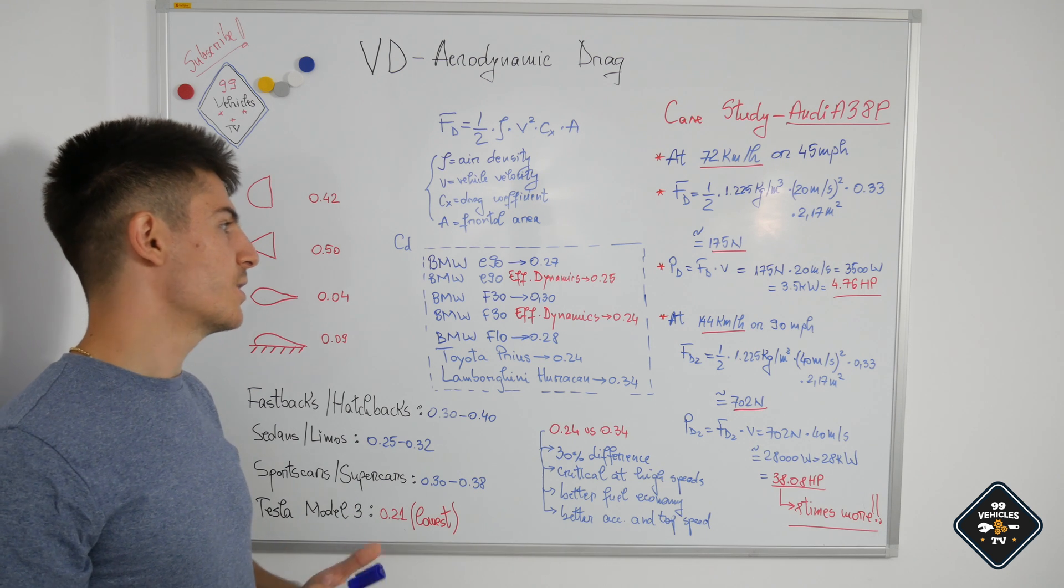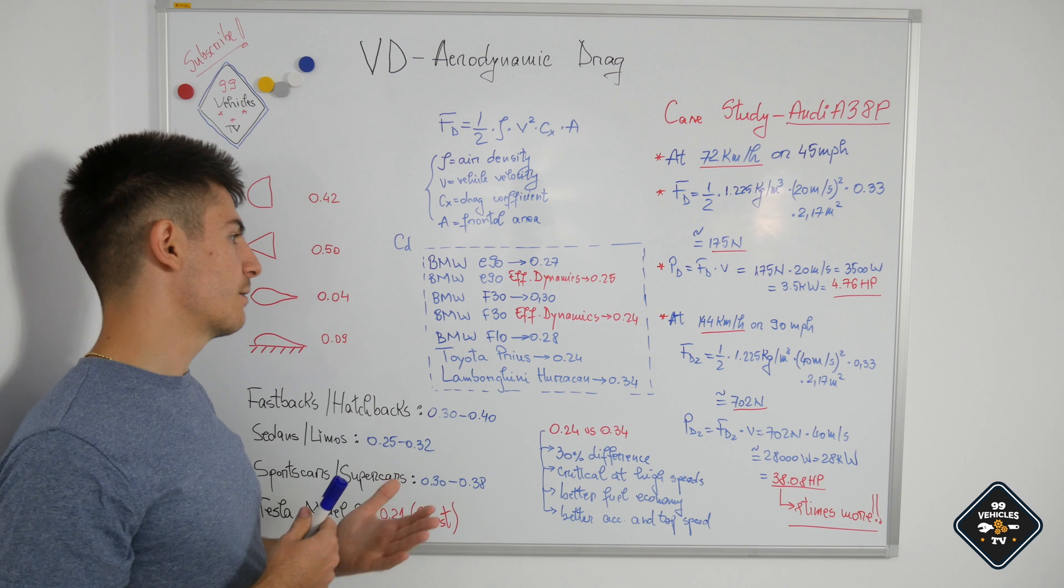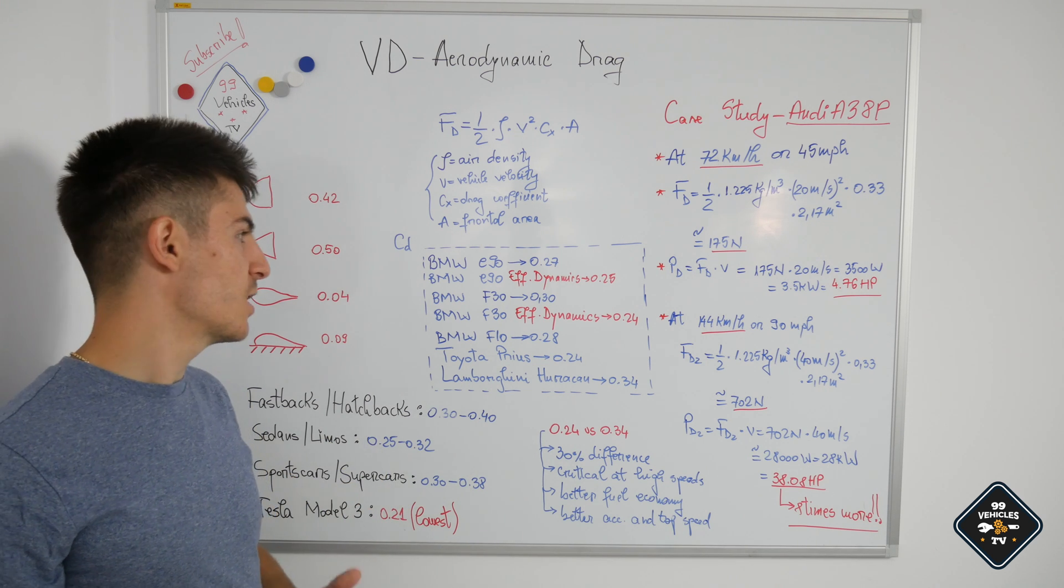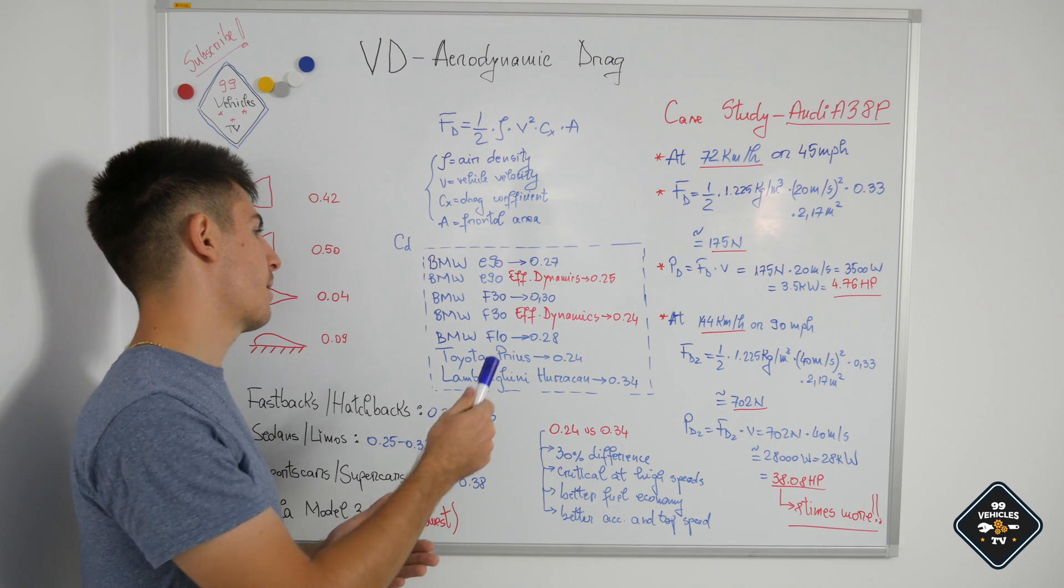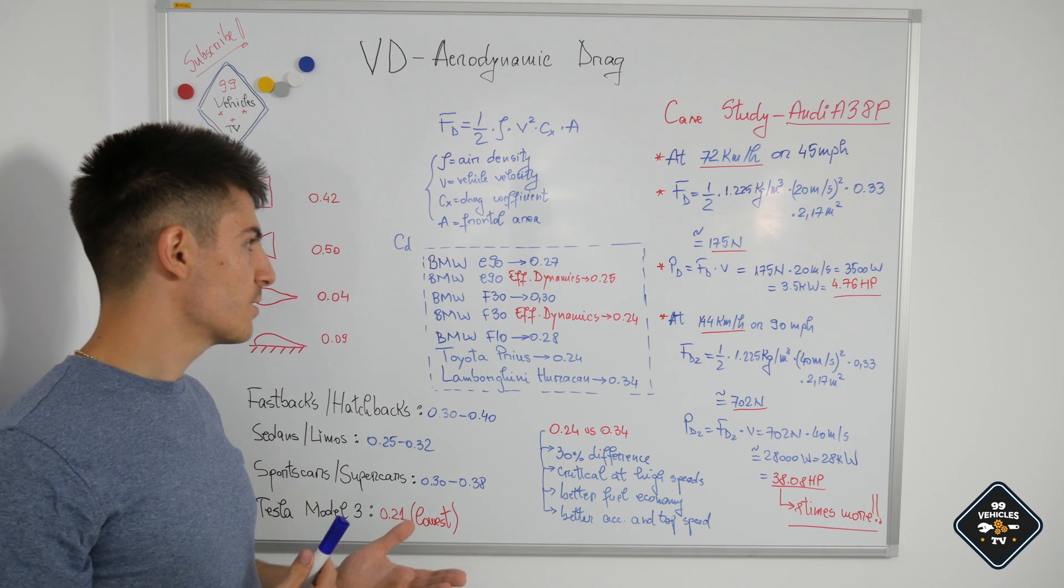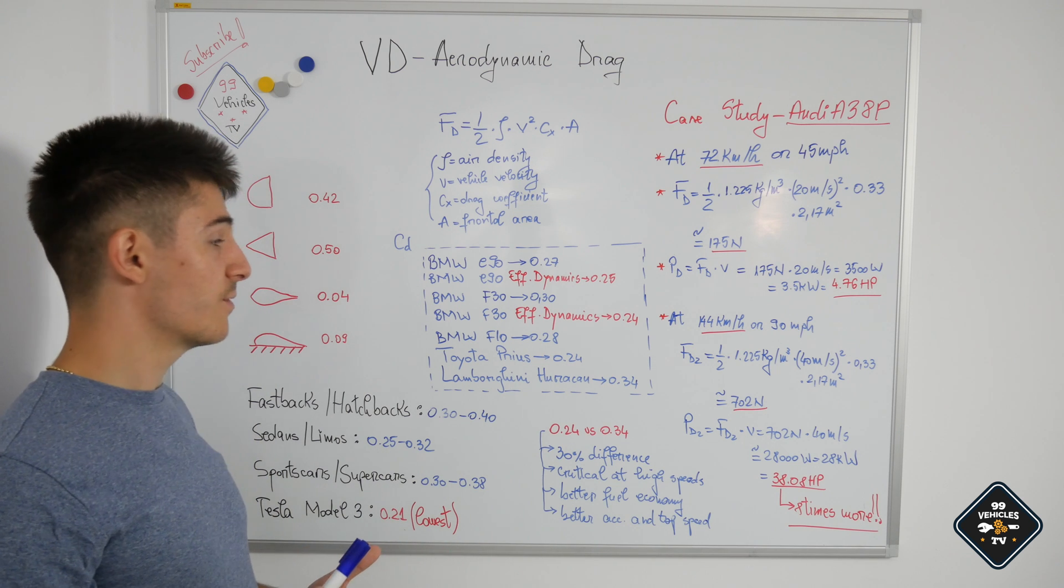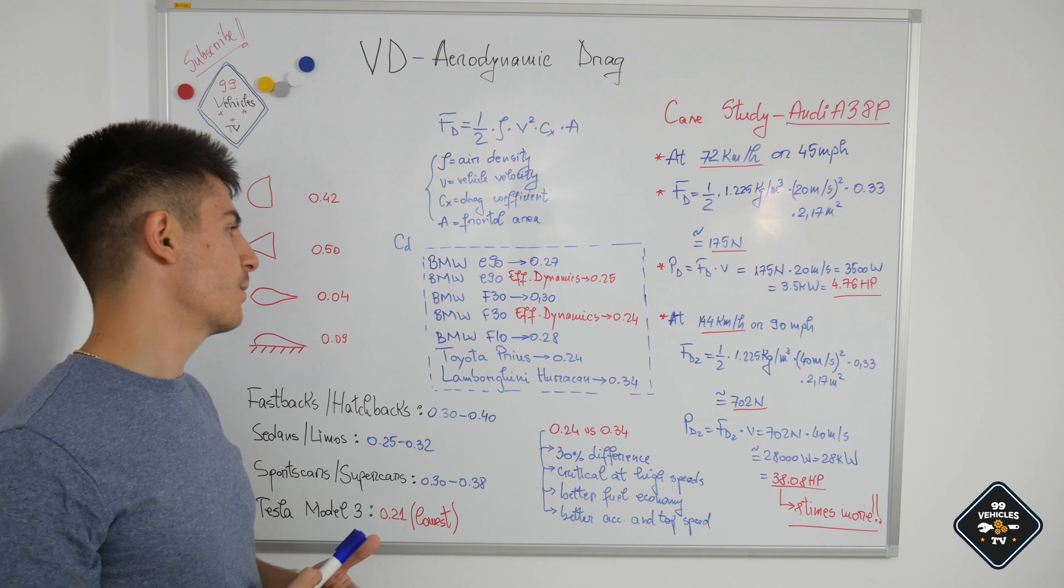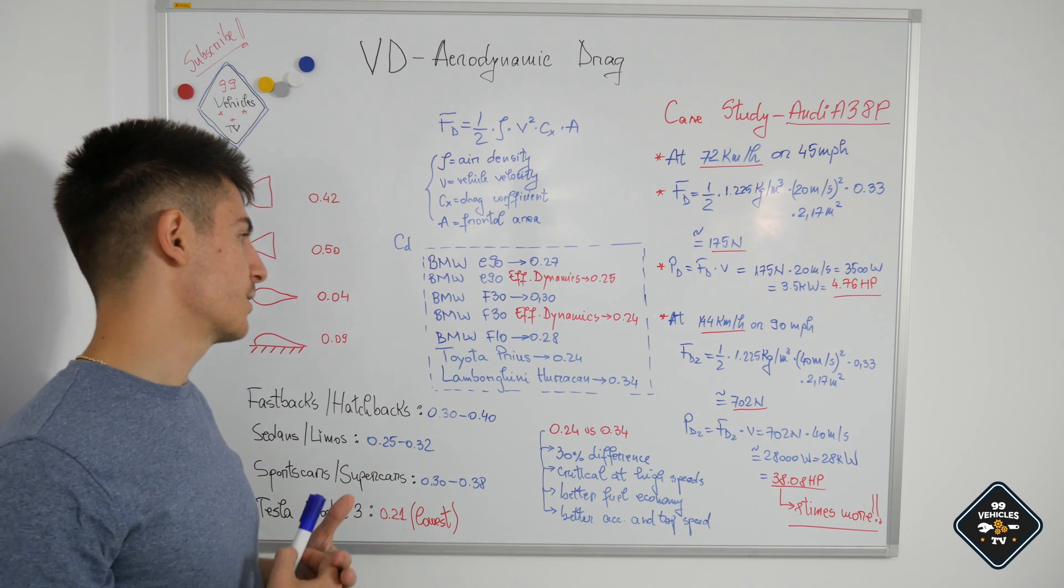I started with the BMW 3 series E90, which has a 0.27 to 0.30 drag coefficient. If the car comes with the efficient dynamics package, which was optional for this car, it could drop to 0.25, which sounds small, but from 0.25 to 0.27 is an 8 to 9 percent difference, which could help you gain better fuel consumption and better top speed.